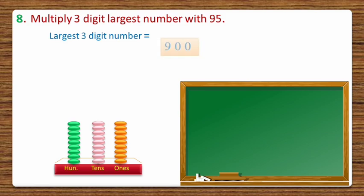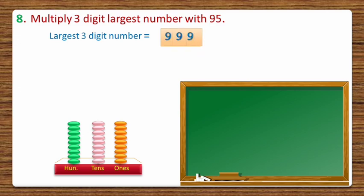So with 9 hundreds (900), 9 tens (90), and 9 ones (9), we get 999. So 999 is the largest 3-digit number, and we need to multiply it with 95.